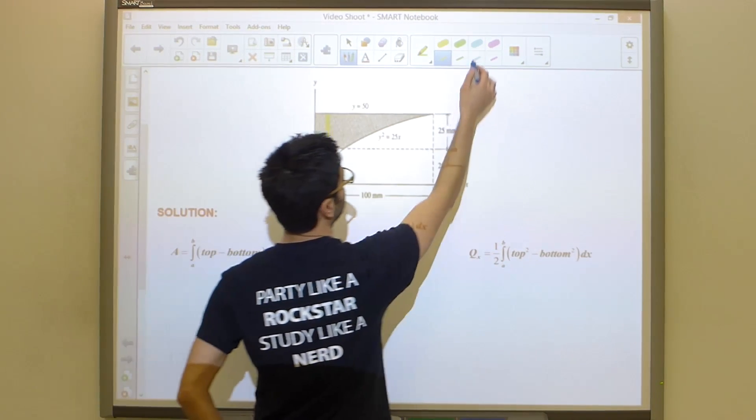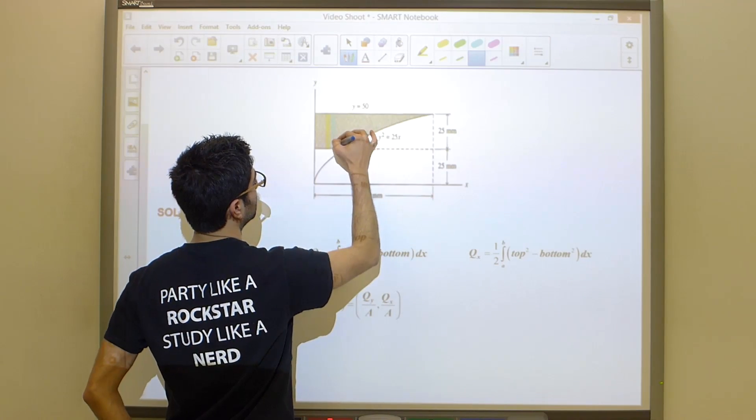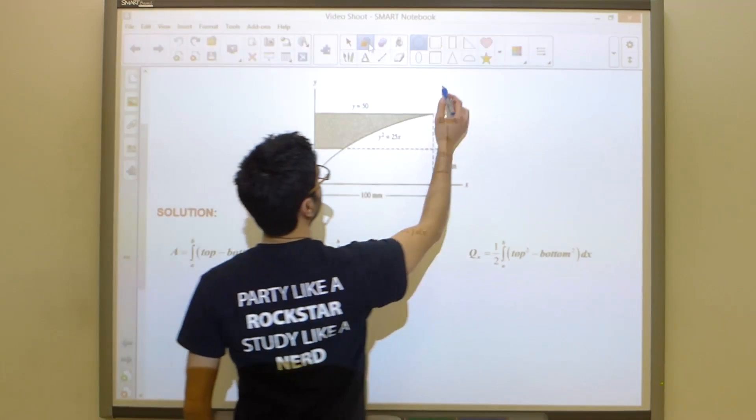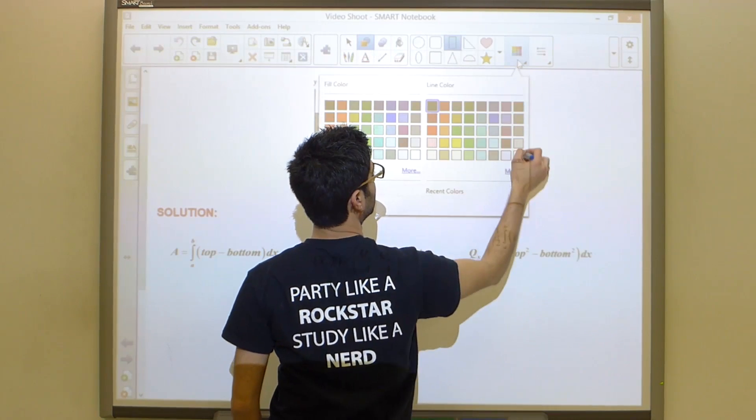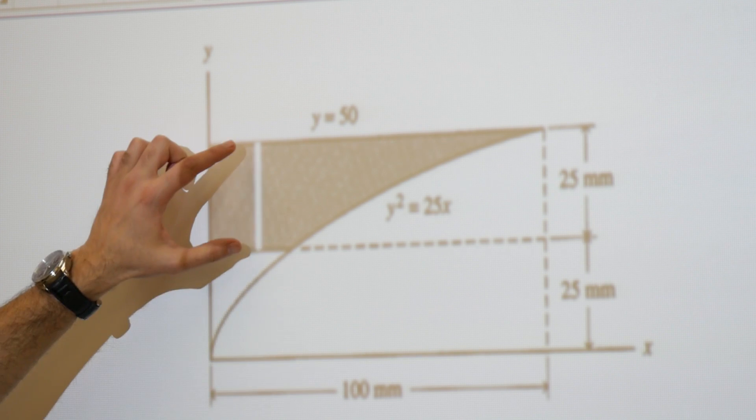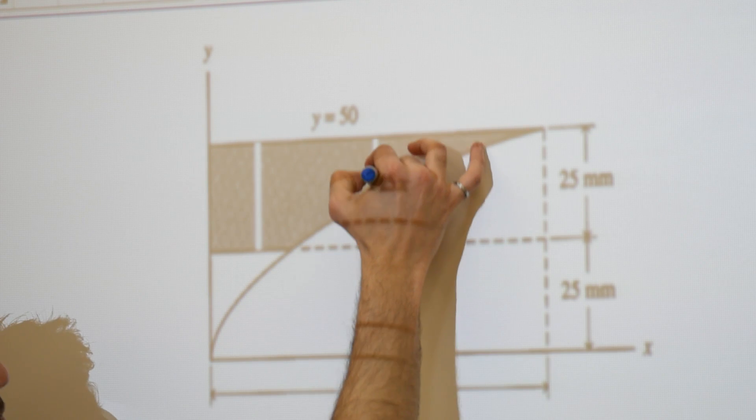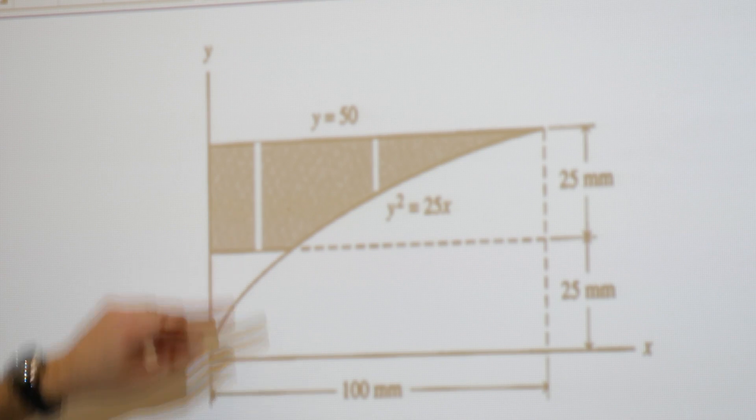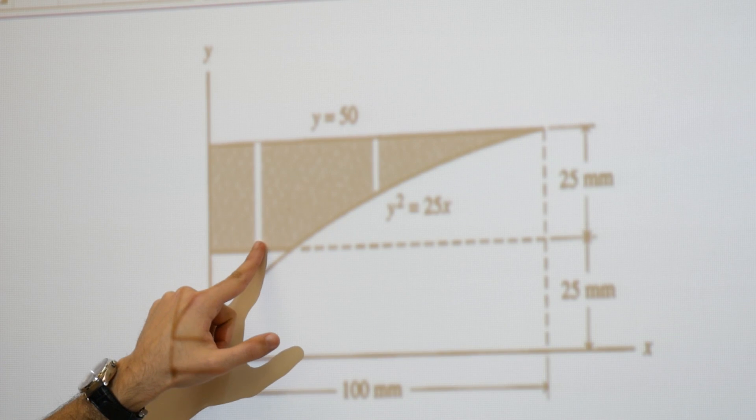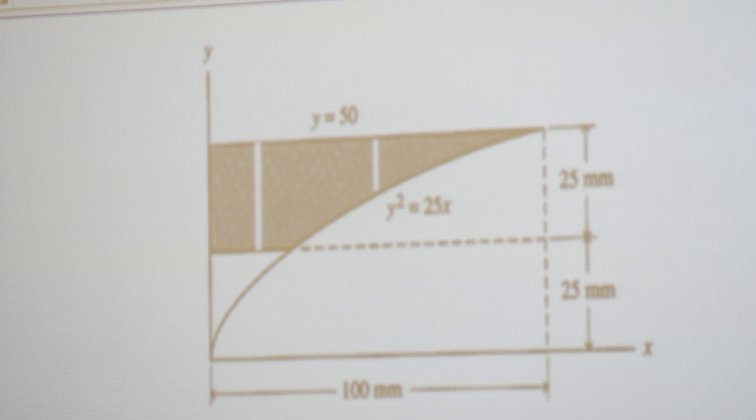If we take a look at the top and bottom over here versus somewhere else in this shaded region, we can see that the top in both cases is the same but our bottom changes. This is why instead of using these formulas with our top and bottom, it might make sense to do this a different way.